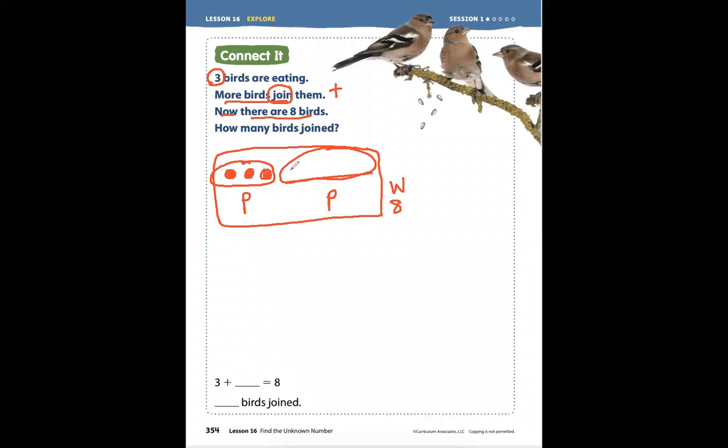Three, four, five, six, seven, eight. So we started with three and more came, now there's a total or a whole of eight. Three birds plus more that came equals eight. Three, count on to eight: three, four, five, six, seven, eight. Three plus five equals eight.